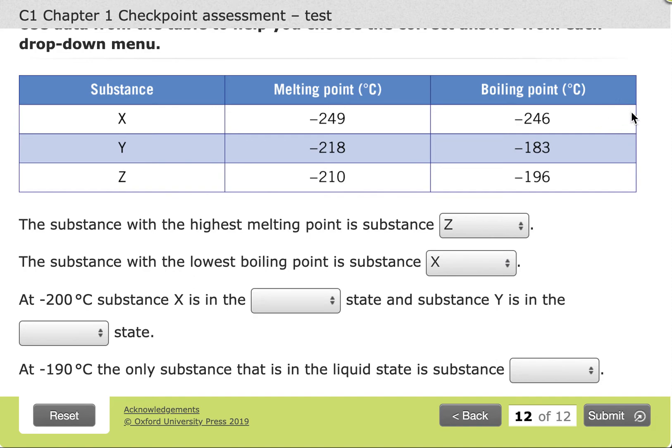In other words, minus 200 is greater than minus 246 and greater than minus 249. We know that this is the boiling point, and if we're between the melting and boiling points, we are in the liquid state. So if we're on the right-hand side of the boiling point, then we are in the gas state.